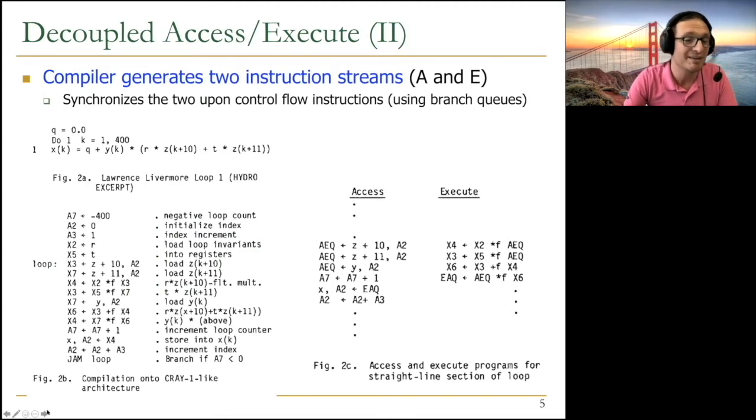So essentially, the basic idea is instead of having a single instruction stream that looks like this, this is a very famous loop, Lawrence Livermore loop, it does some scientific computation, you basically have two instruction streams: access and execute. And it's essentially doing the same thing. But whenever you need to do memory access, you do it over here. Whenever you need to do operations, executions, and branches, you need to do it over here.